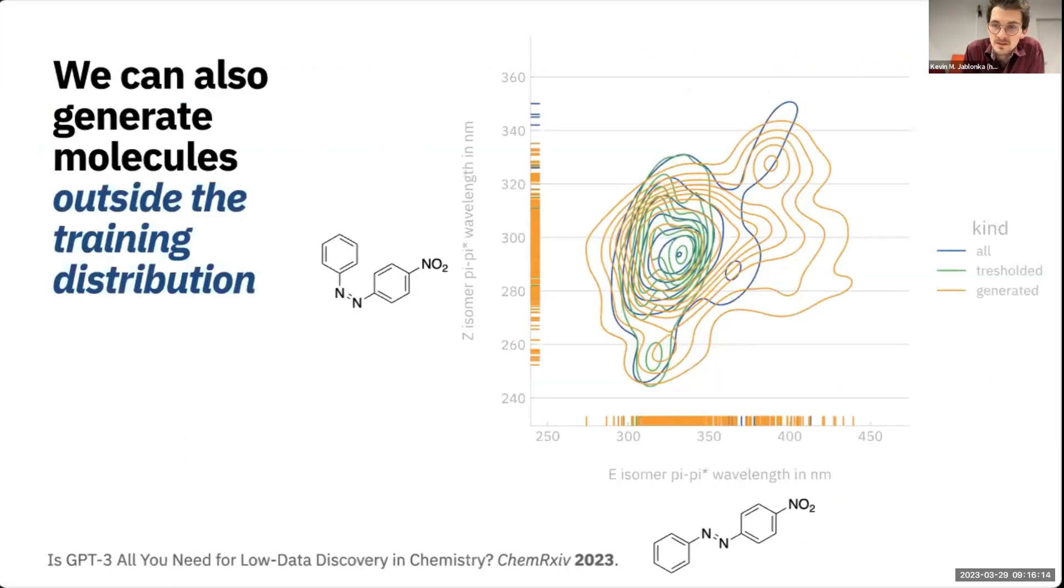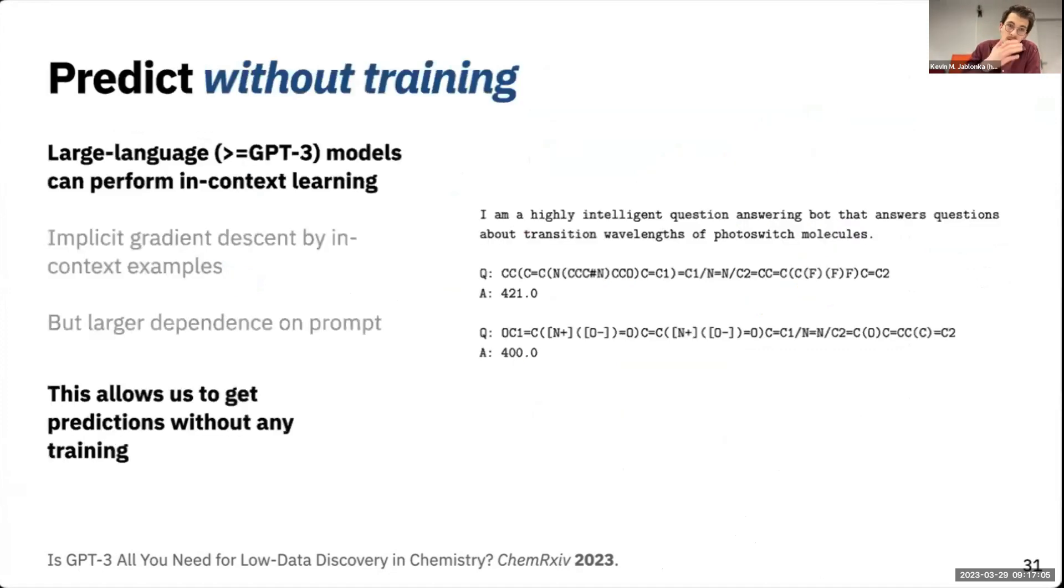You can go beyond just predicting properties - you can even do inverse design. Here we have photo switches. You want to know what the wavelengths are for the different isomers, like for the E and Z isomer, which you have on the two axes. We have a database shown here in blue that has different photo switches. You want to know how does the model perform if we only train on the ones that absorb below 350 nanometers. So we train only on the green ones. Then we ask the model to go beyond this, and it does so. It can go beyond what it has seen in training and give us a switch that absorbs even in the visible regime.